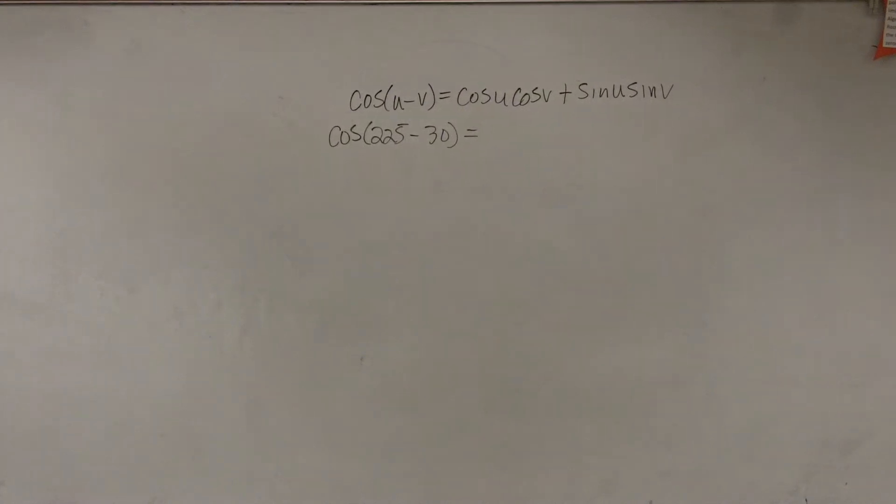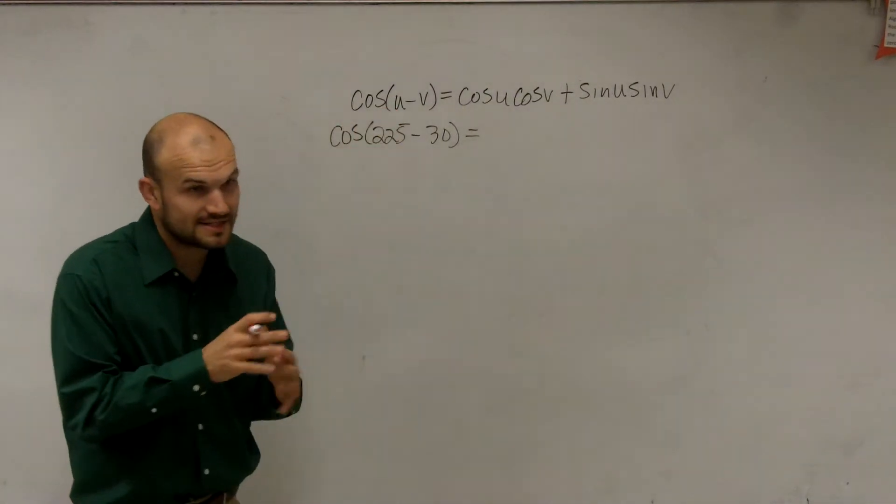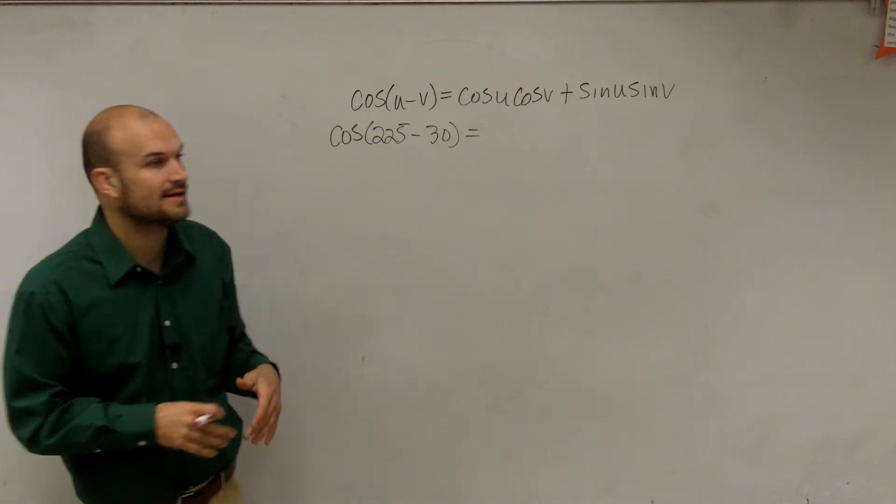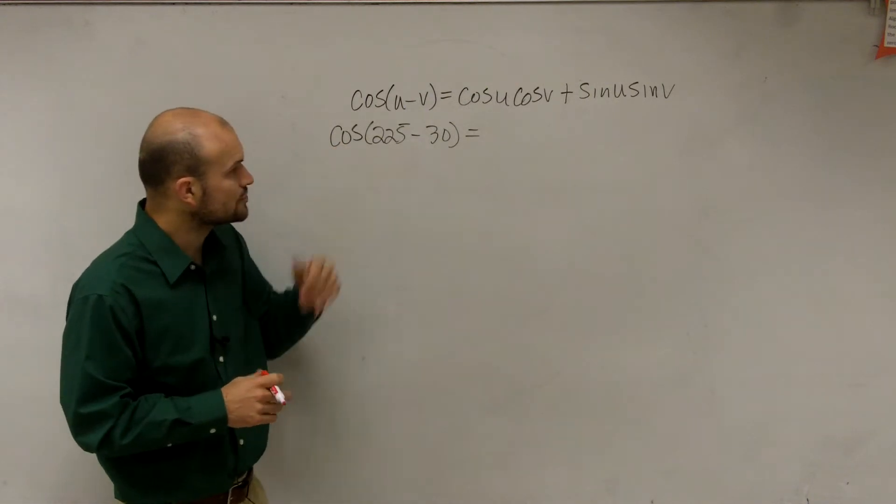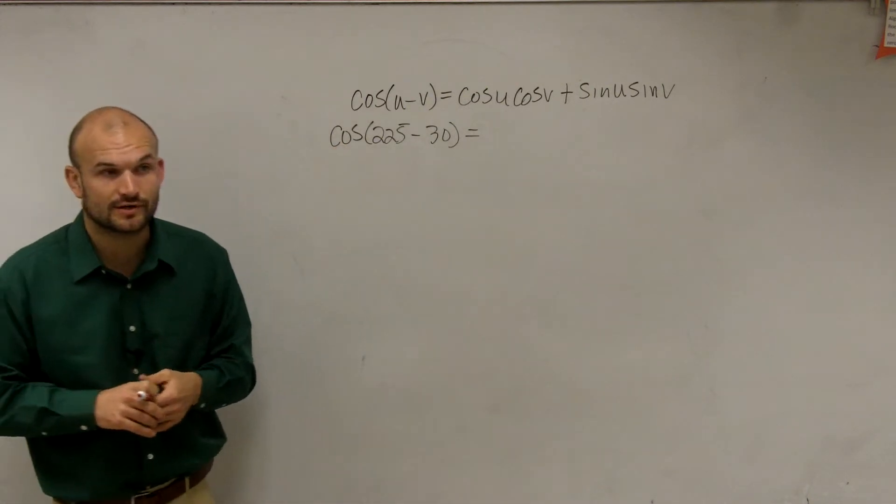Good. Are you guys ready? Sweet. All right, so all they're asking us to do is find the cosine of 225 degrees minus 30 degrees.